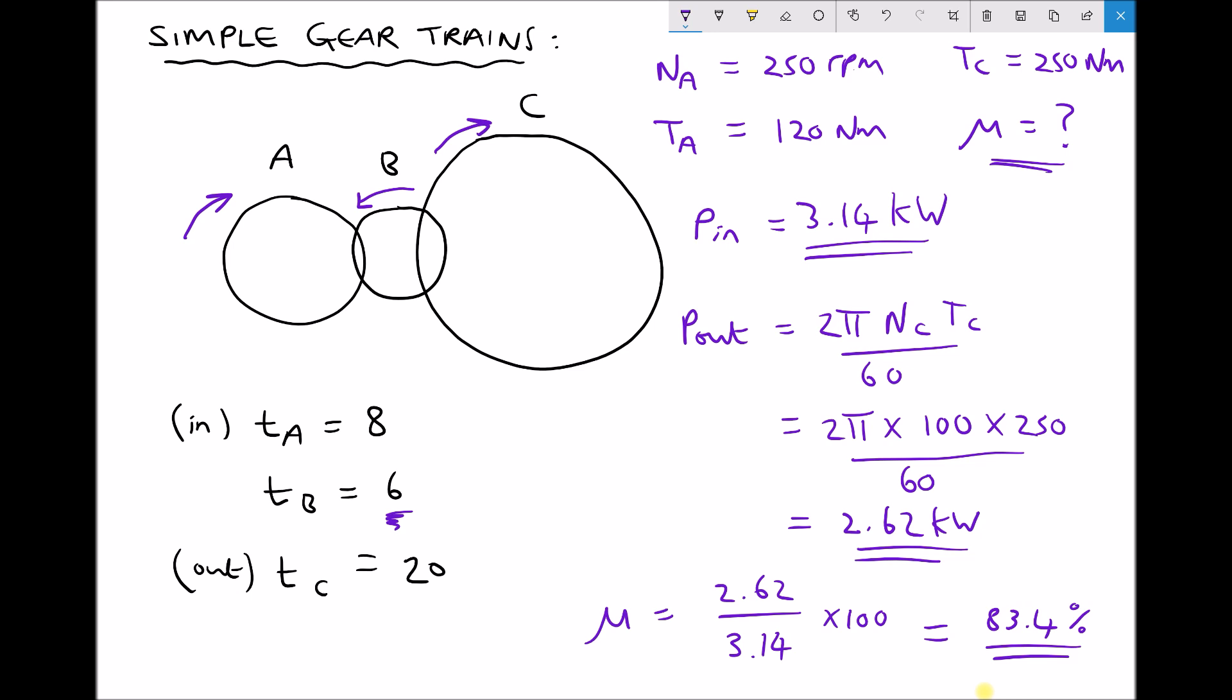Now in this case we wouldn't have been able to calculate the efficiency from the torque values because we didn't know the value of the ideal torque. Alternatively we could have calculated the ideal torque and then use that to determine the efficiency. And I'll just show you how we would do that now.